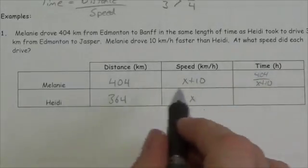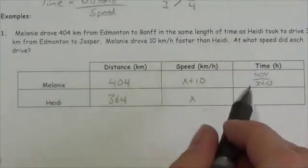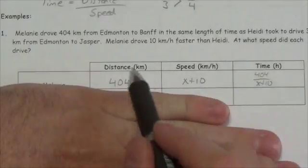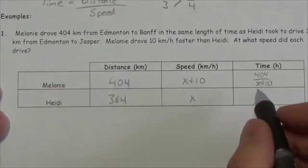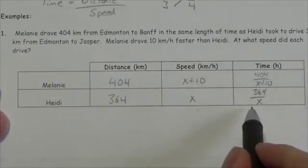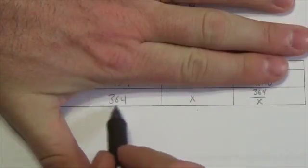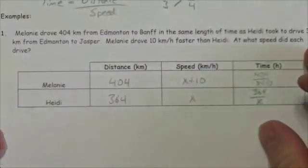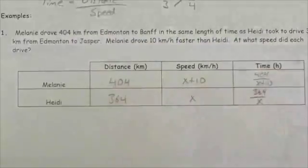It doesn't matter how these two times compare when filling in the chart. Melanie's time is just her distance divided by her speed. For Heidi, that's 364 divided by x — it's Heidi's distance over Heidi's speed. This chart helps us organize the information pulled out of the word problem.